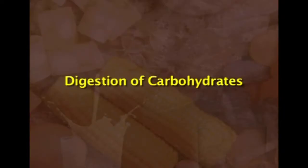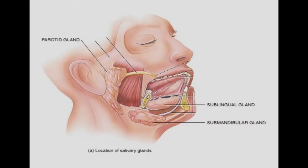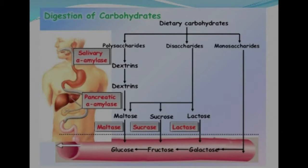Carbohydrate digestion begins in the mouth. The salivary glands secrete saliva to moisten food. While chewing, they also release salivary alpha-amylase, also known as ptyalin, which begins breaking down polysaccharides. Its activity is slight compared to pancreatic amylase and releases only traces of dextrin and maltose, because food is exposed to the enzyme for only a short time.